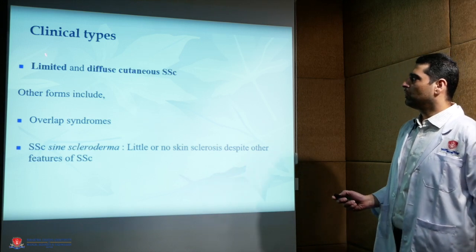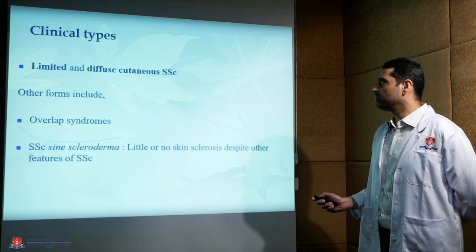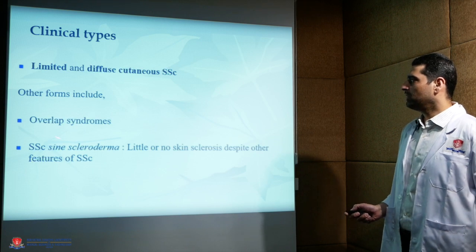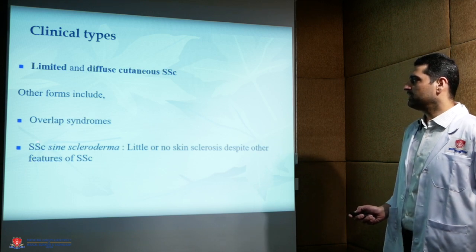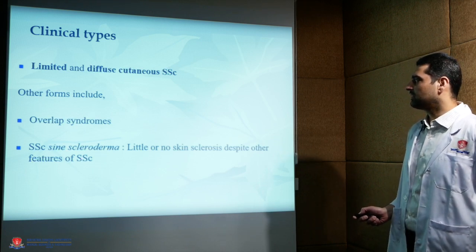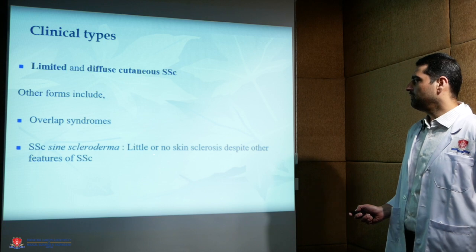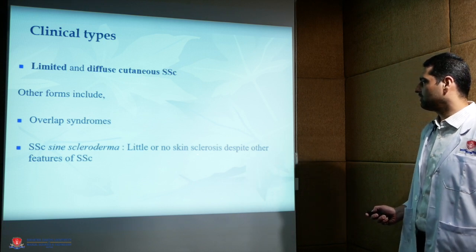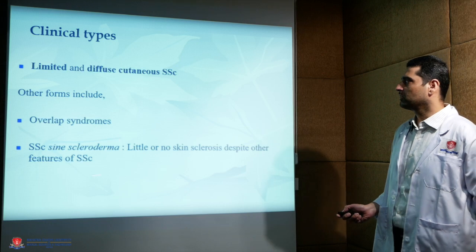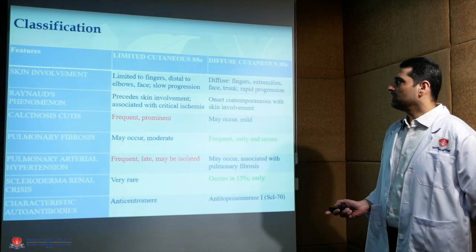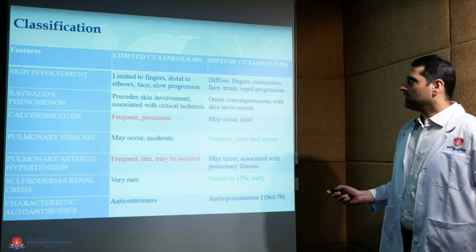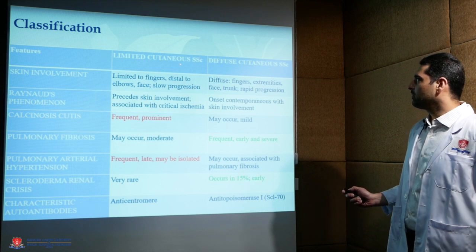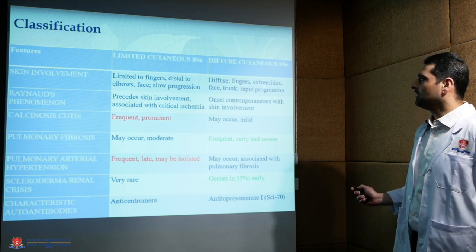Clinically, the most common forms are limited and diffuse cutaneous systemic sclerosis. Other forms include overlap syndromes and systemic sclerosis sine scleroderma, which has little or no skin sclerosis despite other features of systemic sclerosis. It is important to differentiate between the limited and diffuse cutaneous variants.